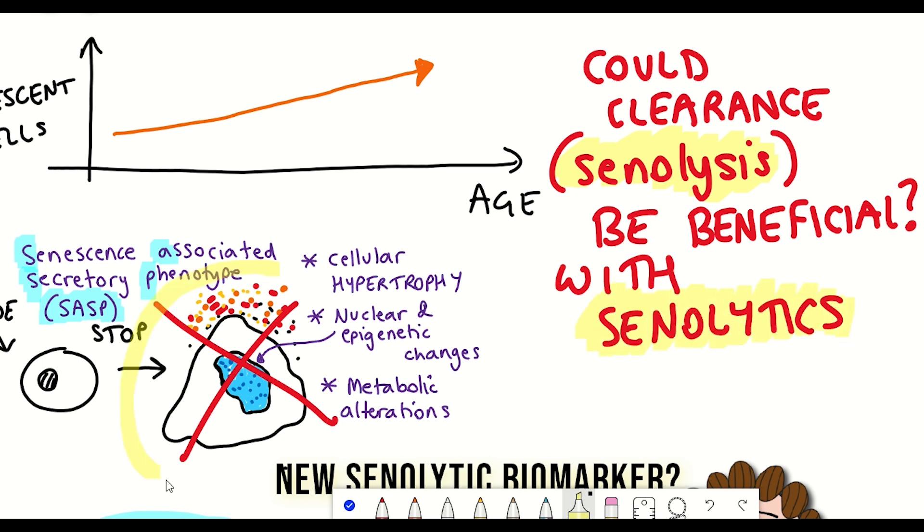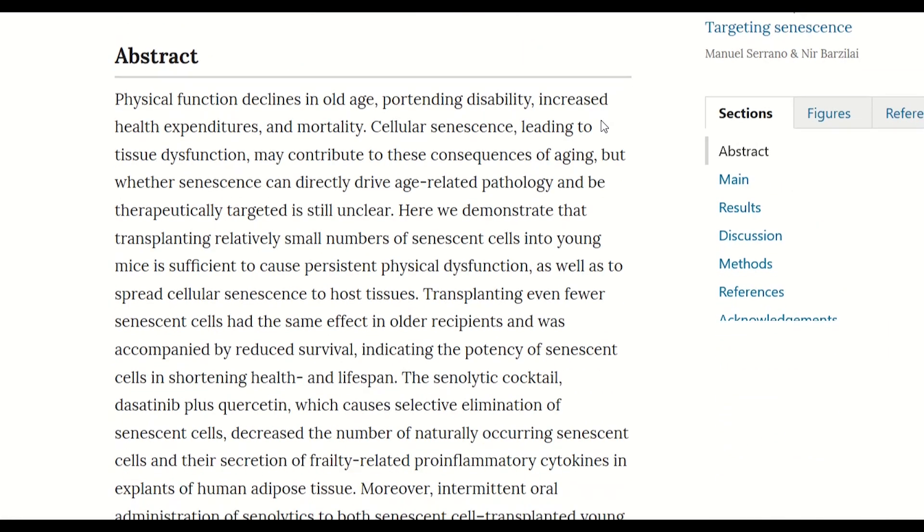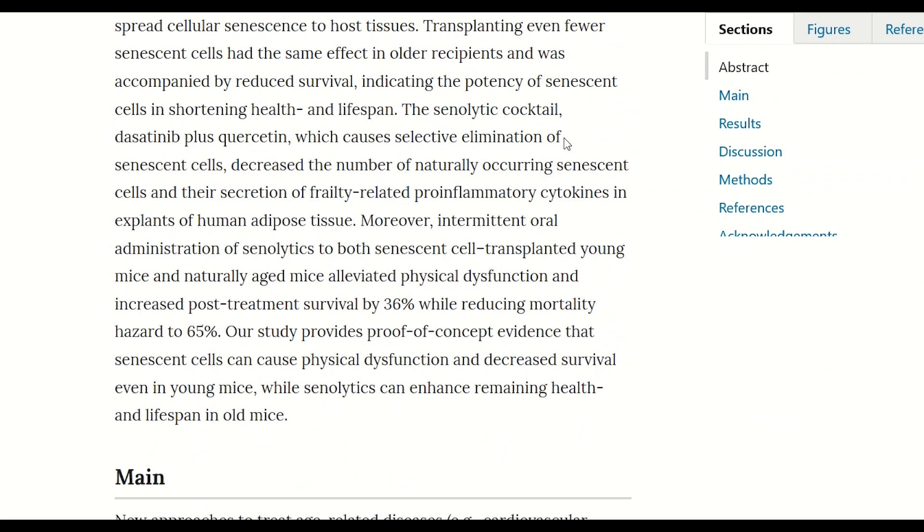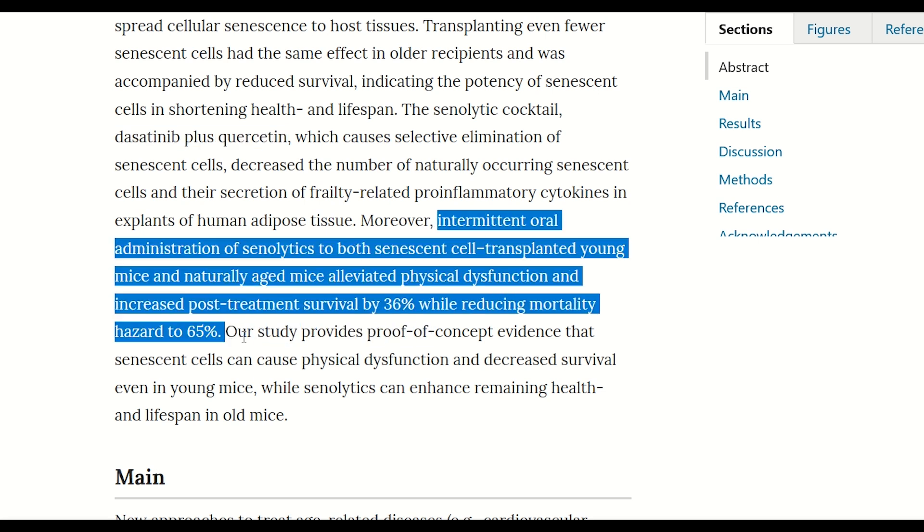And so this has already been tested in a variety of different studies in a variety of different ways. This 2018 study used a combination of dasatinib and quercetin, which together act as senolytics, and gave them intermittently to aged mice, and showed that it alleviated physical dysfunction and increased post-treatment survival by 36%, while reducing mortality hazard to 65%.